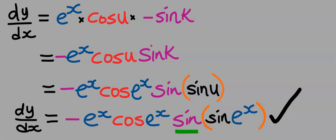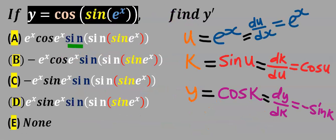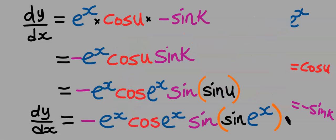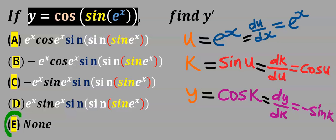Remember the sign appears only two times in each of the options. Here we got three of the sign, but in the answer we have only two. Hence our answer from the options is E.